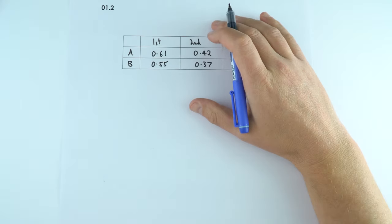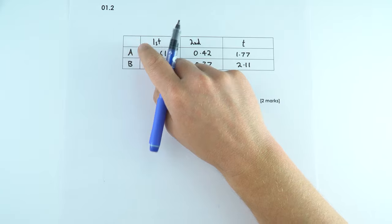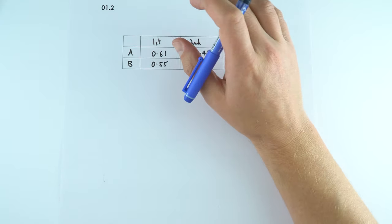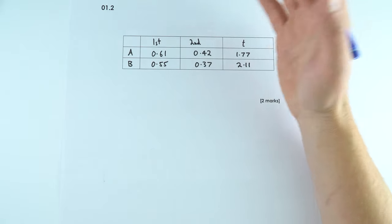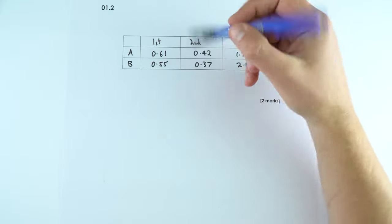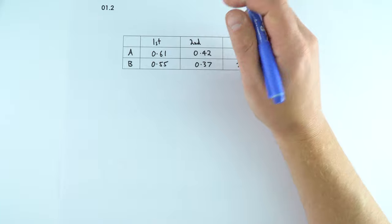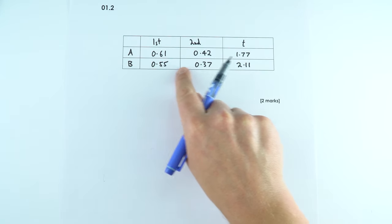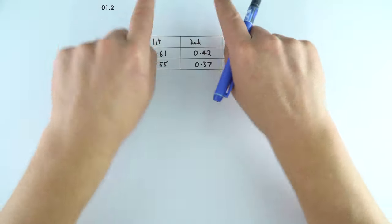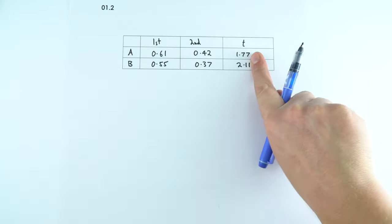For the second part of question 1, we have two sets of readings, set A and set B, with the light gates in different positions. Assuming the acceleration is the same in each case, we need to use the data to explain how the distance between the light gates is bigger in reading B. In reading A the light gates are close together; for reading B they're further apart.